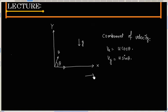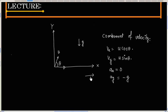There is no acceleration in the x direction, so ax is 0. And we have acceleration in the negative y direction, so this is minus g.